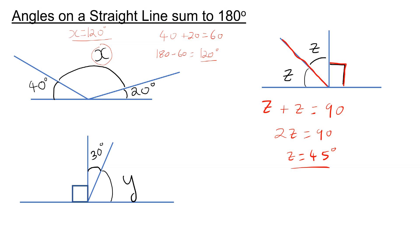Finally, we have 90 degrees and 30 degrees, and Y has got to make up 90 degrees. So I can say Y plus 30 equals 90. So Y needs to be 70 degrees.